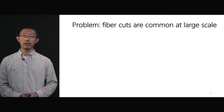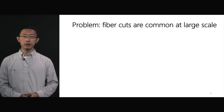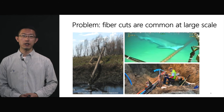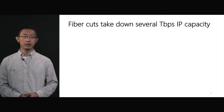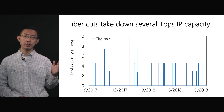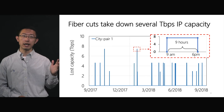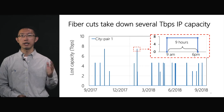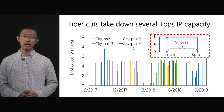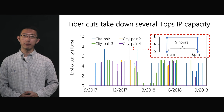Operating a global scale WAN while maintaining availability is challenging, mostly because of unexpected failures, especially fiber cuts. There are many reasons that lead to fiber cuts, such as disasters, construction works, or even animals. To quantitatively answer how severe fiber cuts are, we study the impact of fiber cuts on a global scale WAN. Each peak in this figure represents a fiber cut event. For our city pair, we observe that fiber cut events happen almost every month. If we zoom into one of the events, approximately 8 terabit per second capacity is lost for 9 hours until the fiber is repaired. This is a massive loss for the IP layer capacity. If we consider more city pairs in the network, we find fiber cuts take down several terabit per second capacity quite often.